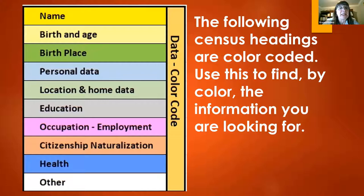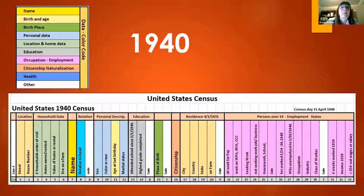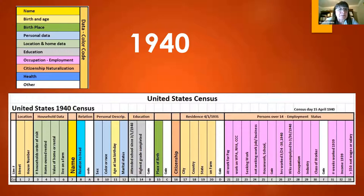The second sheet from last week, available again this week, is a color-coded version of the census. The color-coding helps you find information by color. For example, if you're looking for something related to name, it would be yellow; citizenship or naturalization would be a brown color. This example shows the headings across the top of the census, which are often too small to read on digital images, but they're color-coded. Look for columns 13 and 14 to find education information — it's gray.